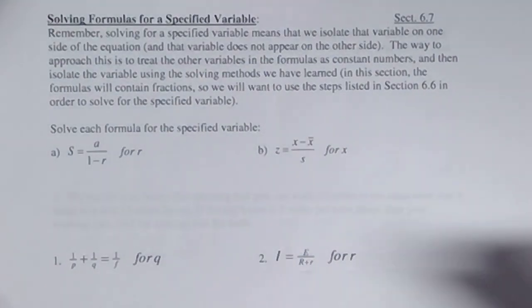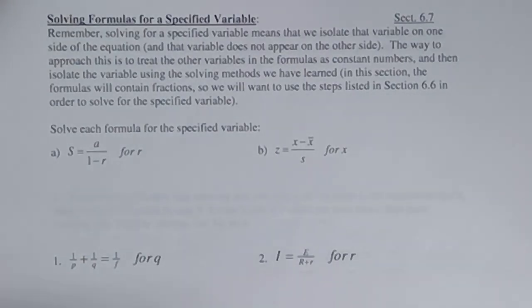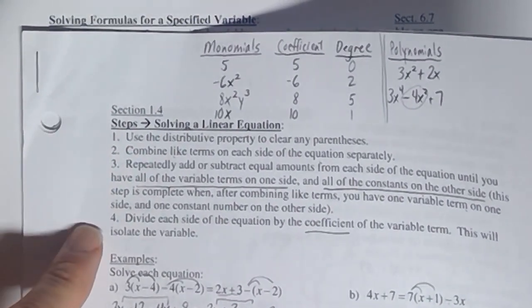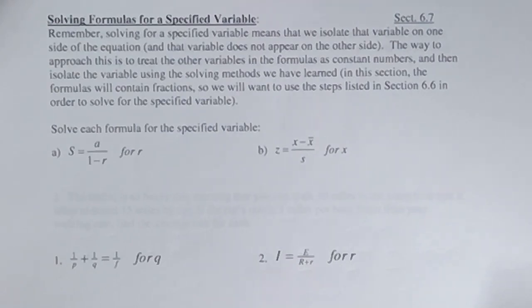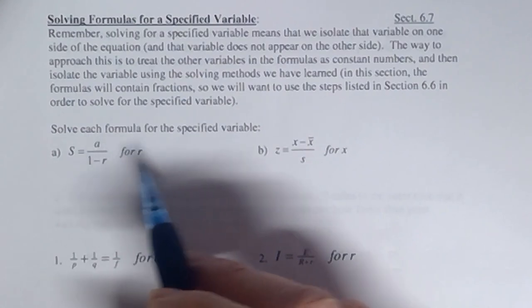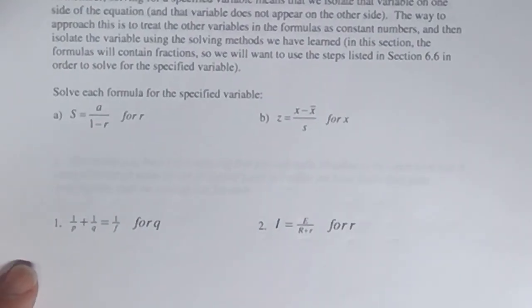That same thing is going to happen here today. The only difference is that you have to clear out the fraction first, then it will be an equation that fits that linear format once again. You just follow those same steps for solving a linear equation after you get rid of that fraction. Now in the last section, we learned to get rid of the fraction by multiplying both sides by the LCD. But for at least three out of these four problems, I have a shortcut we were not able to use in the last section, but we can use it here.